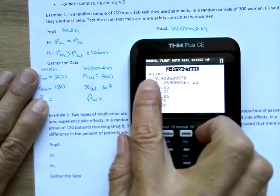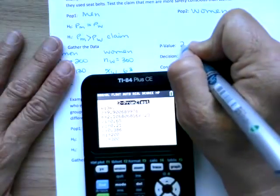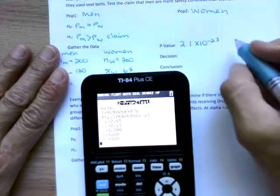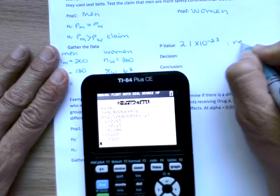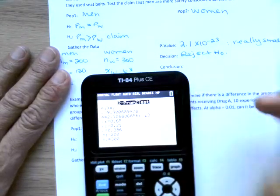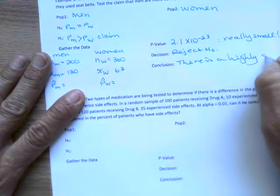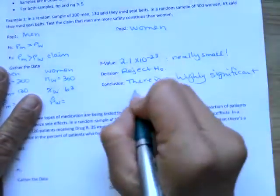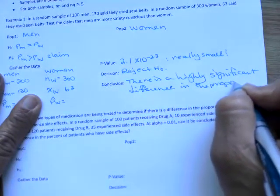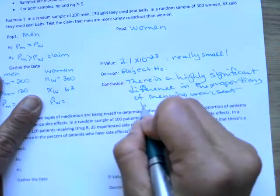That first line is your alternative hypothesis. Second line is your test value if you're using traditional method. Third line, that is our P value. So 2.1, and hopefully you're all yelling at me, look to the right, times 10 to the negative 23. That is such a small, small P value. Insanely small, really really small. So we will heartily reject that null hypothesis. They are not the same. There is a highly significant difference in the proportion of men who wear seat belts.